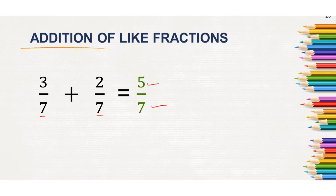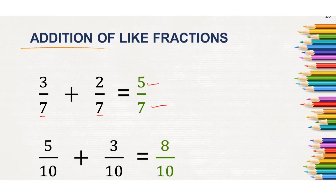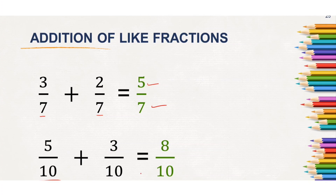Look at another example: 5 by 10 plus 3 by 10. Out of 10 parts, you have eaten 5 parts and your friend has eaten 3 parts, which means out of 10 parts you have eaten 8 parts. 5 plus 3 equals 8, and the denominator 10 remains the same. So, the answer is 8 by 10.